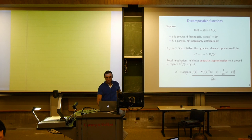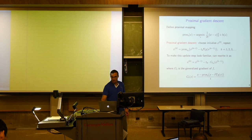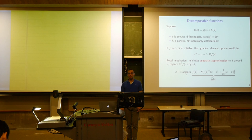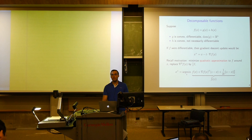Let's go right to proximal gradient descent. This is what we learned last time. The problem we're thinking about is minimizing a sum of two functions, g plus h, where g is convex and smooth. And h is convex but not necessarily smooth. But it has a special property: its prox operator we know how to calculate, at least efficiently or approximately.